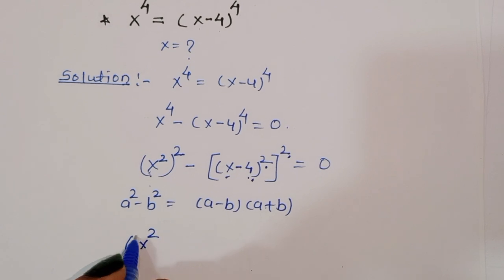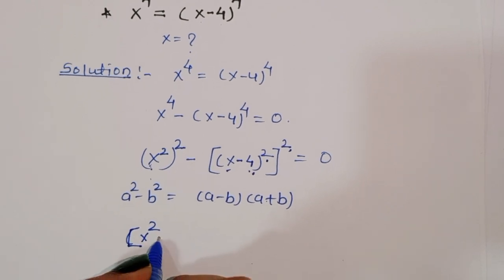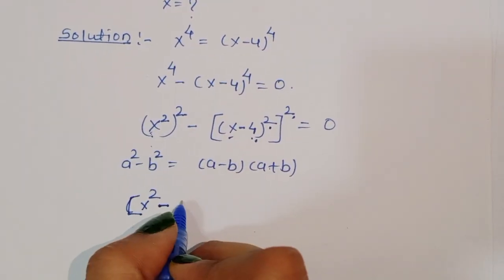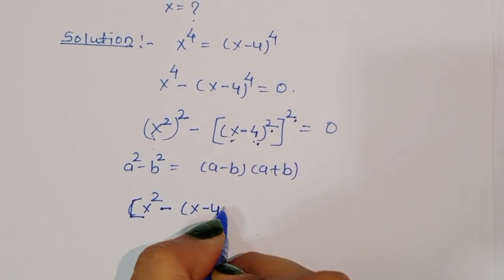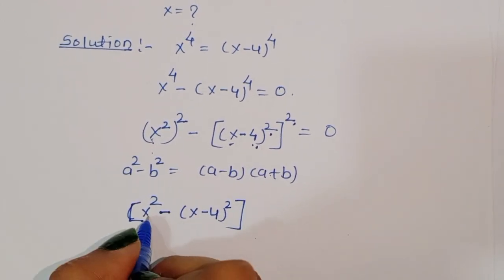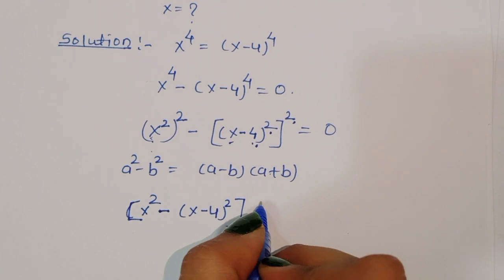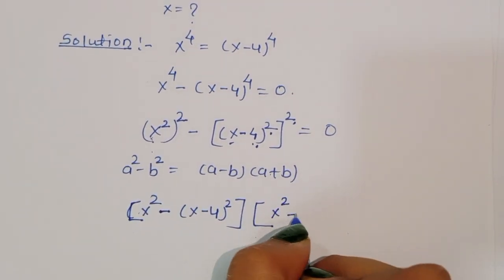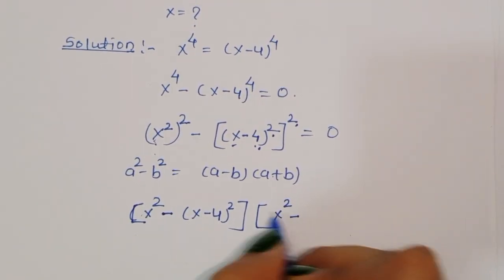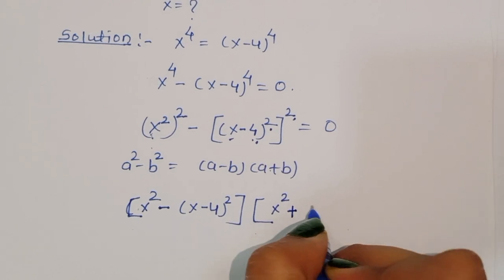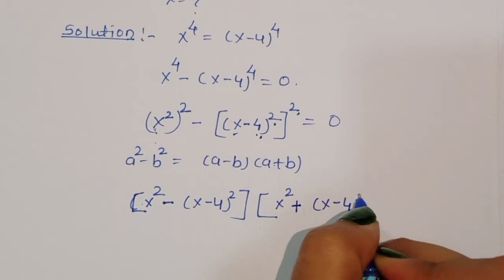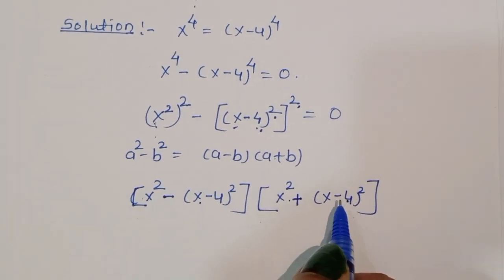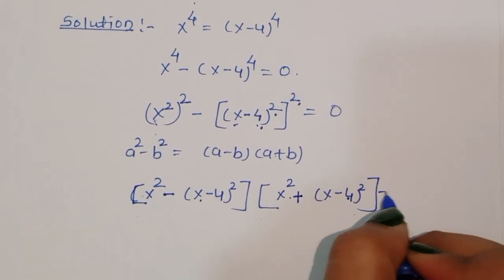Using that formula we write: x square minus x minus 4 square, times x square plus x minus 4 square, is equal to 0.